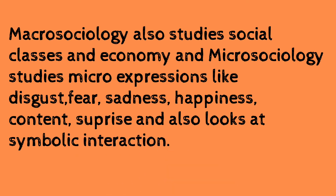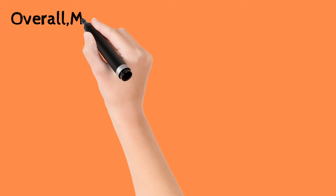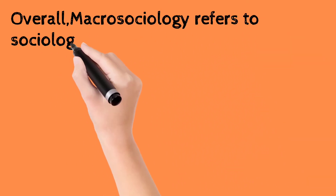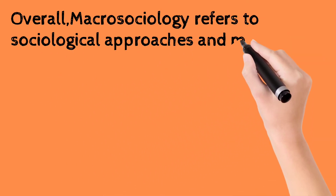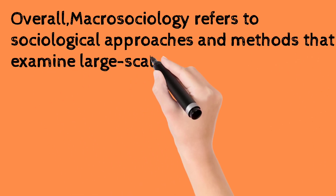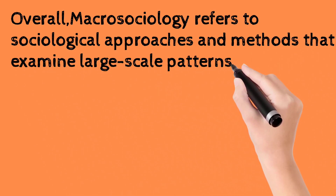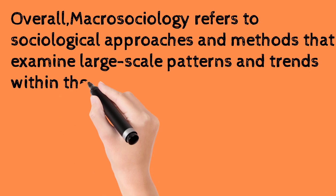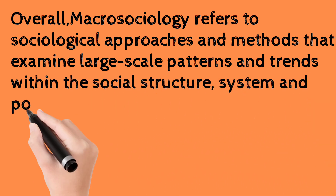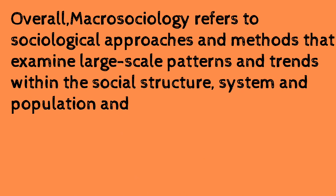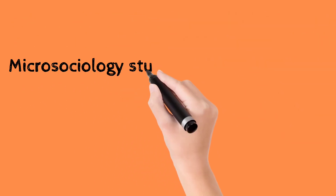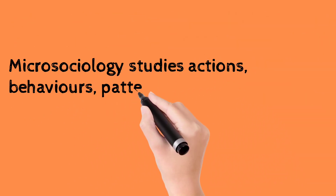Overall, macrosociology refers to sociological approaches and methods that examine large scale patterns and trends within the social structure, system and population. And microsociology studies actions, behaviors, patterns and interactions at ground level.